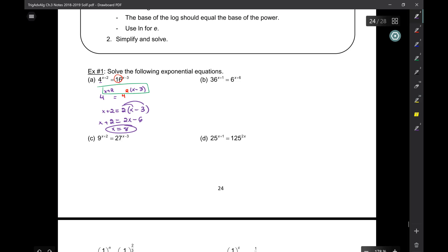The next one, I have a 36 and a six. Again, I can rewrite the 36 as a what? Six squared x plus one equals six x plus six. So I'm going to set the inside equal to each other. Let's combine some steps. I'm going to distribute first off. So that's two x plus two equal to x plus six. When I subtract x's, I get x plus two equals six. So x is four.